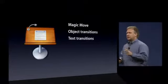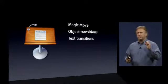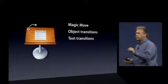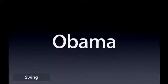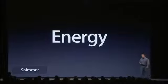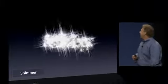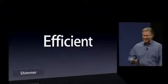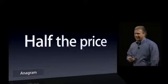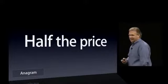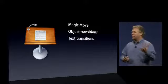Text transitions are really great because even the simplest transition between text objects can be beautiful and powerful. I really love the first example — it's called a Swing transition. Next, a Shimmer — that one's for you, Al. And this one is called an Anagram: if you don't know what an anagram is, you will after watching this transition. So great text transitions.